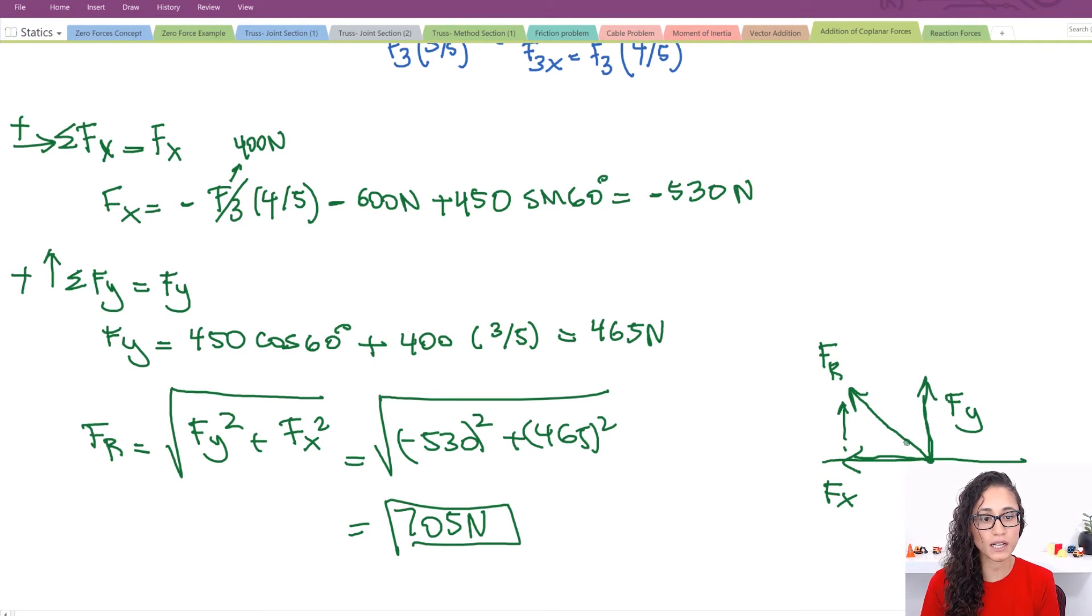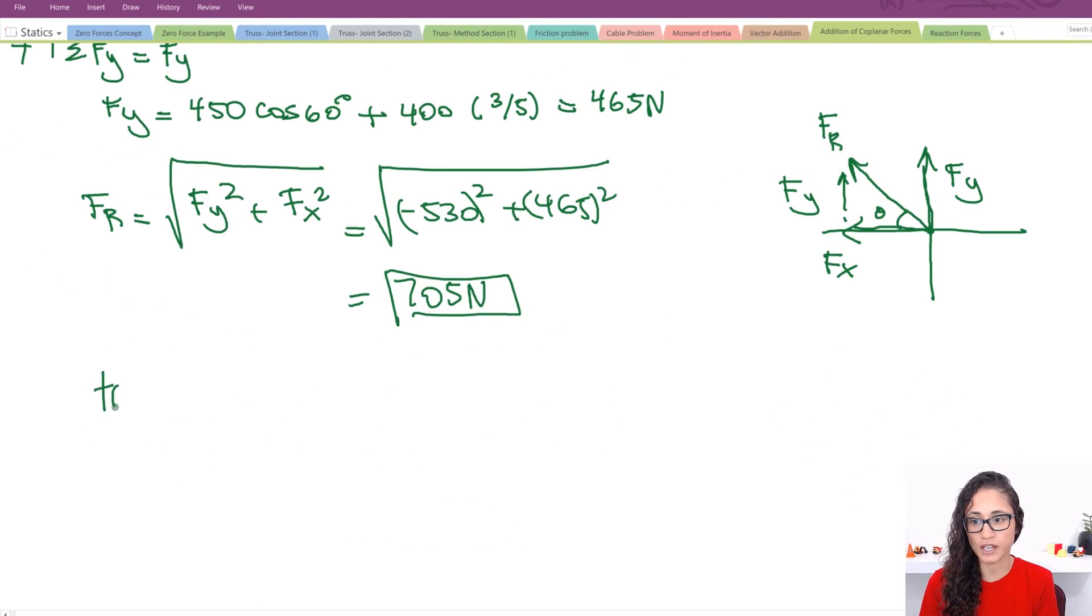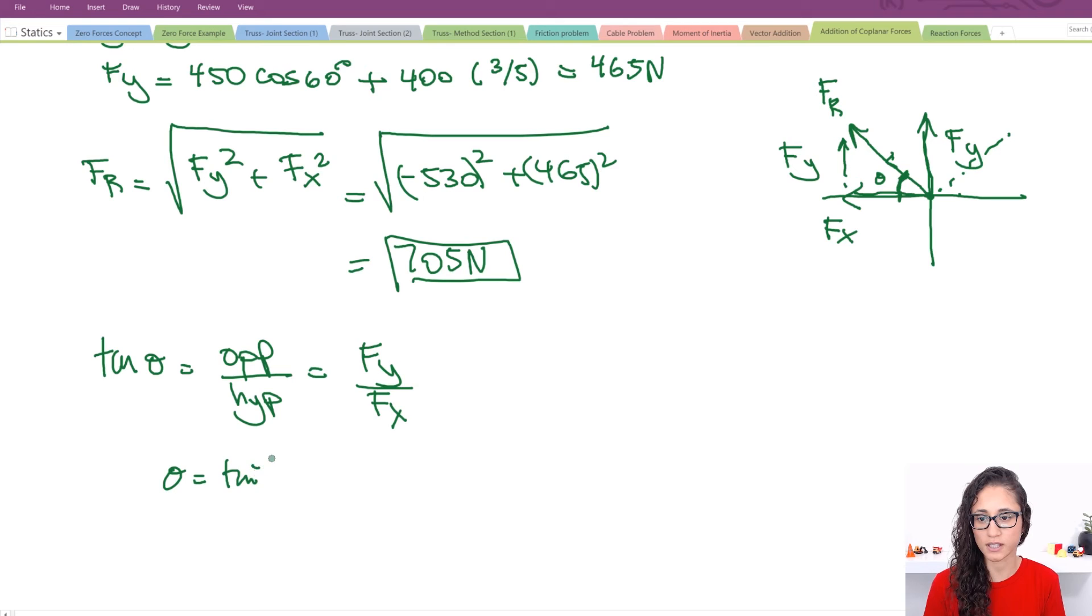Now, if I want to calculate this theta, it's really easy. If this is Fy, I have this is Fy, right? Theta or tangent theta is equal to the opposite over hypotenuse, just like we said earlier. So this is equals to Fy over Fx. So theta is equal to tangent inverse of Fy, which is 465 divided by 530.